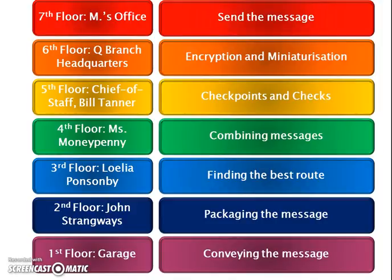So that's the seven floors of the MI5 headquarters. On the 7th floor, you're told to send a message. On the 6th, it's encrypted and miniaturised. On the 5th, checkpoints are added and checks are done. On the 4th, that message is combined with other messages. On the 3rd, the best route is found. On the 2nd, the message is packed up. And on the 1st floor is how the message is sent.